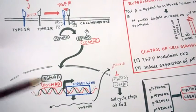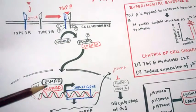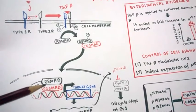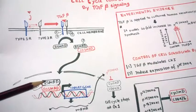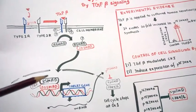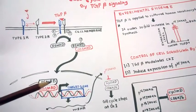TGF beta signaling is an inhibitory signaling pathway for cell cycle control. TGF beta will target genes that will produce CKIs.